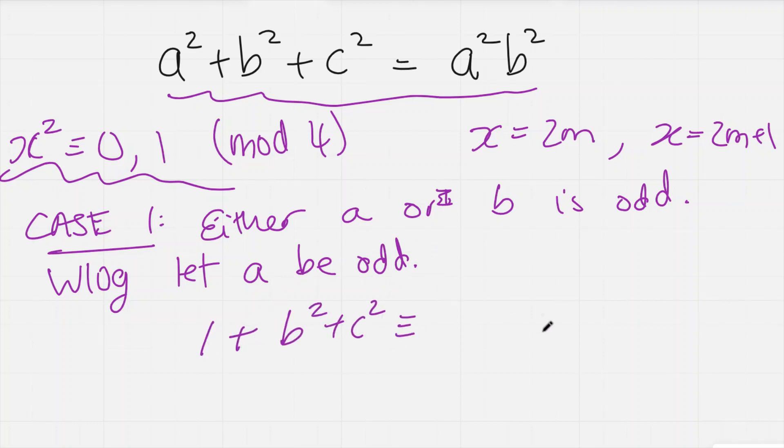Well, what happens when a is odd? We're going to look at this equation here mod 4. So we get 1 + b² + c² is congruent to 1 times b², which is of course b² mod 4.